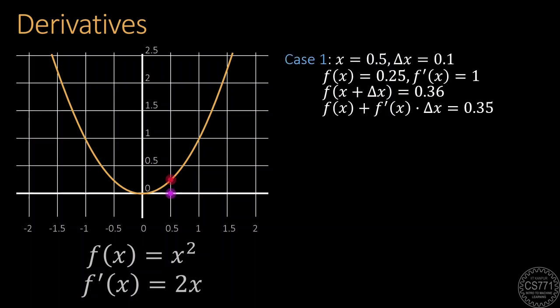Suppose we are at x = 0.5 and we move 0.1 to the right and land up at 0.6. The function value goes up from 0.25 to 0.36. However, notice that we could have predicted quite well what would be the new function value simply by multiplying how much we moved to the function derivative and adding that to the old function value. And this is not an accident.